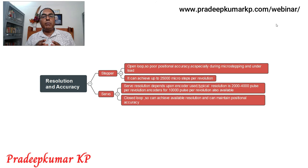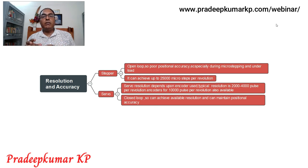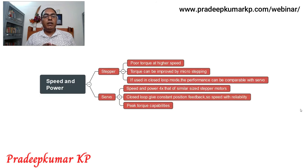For a servo motor, resolution depends on the encoder. Encoders typically have a resolution from 2,000 to 4,000 pulses per revolution, and encoders up to 10,000 pulses per revolution are also available. Because servo has a closed-loop mechanism, we can achieve higher effective resolution — wherever there is a missed step, an equivalent corrective pulse is generated to maintain positional accuracy.